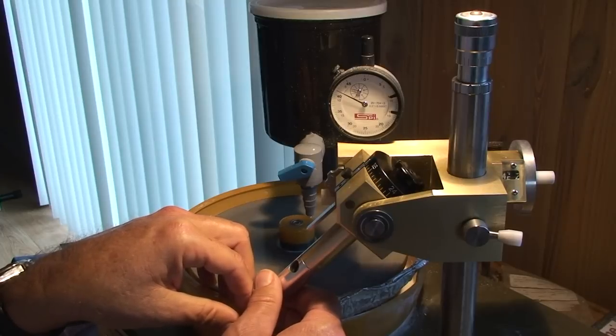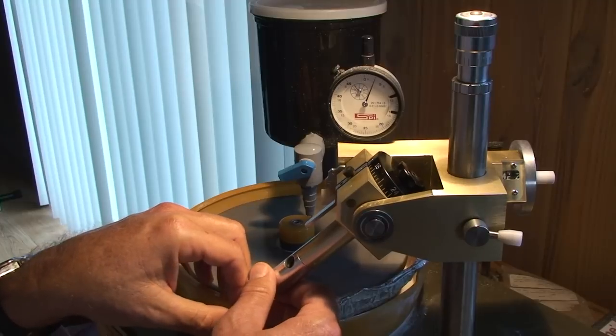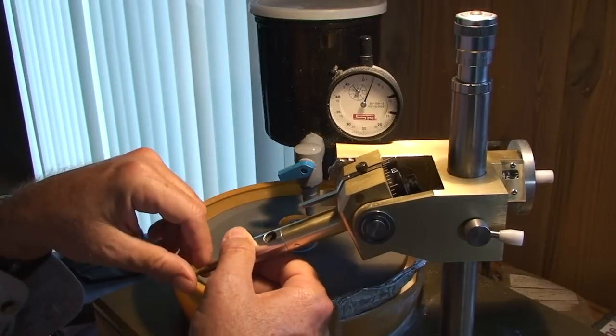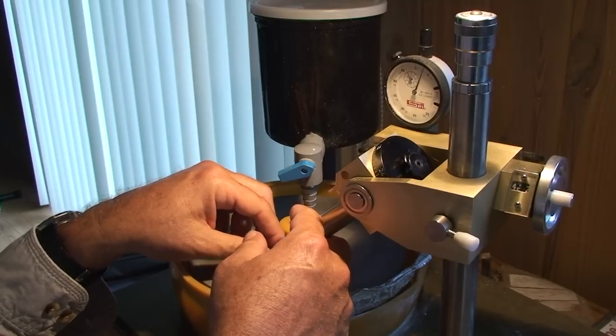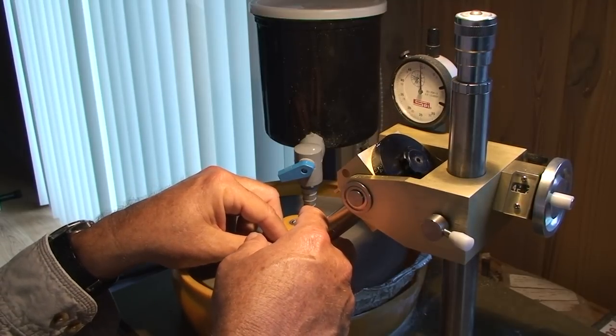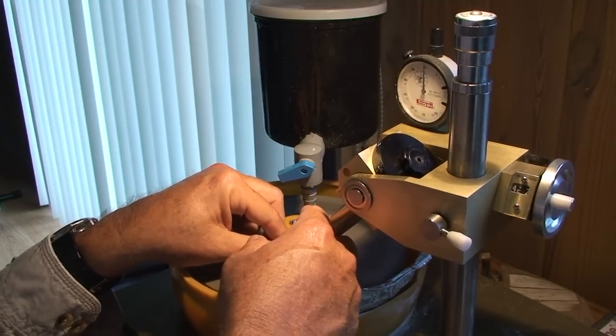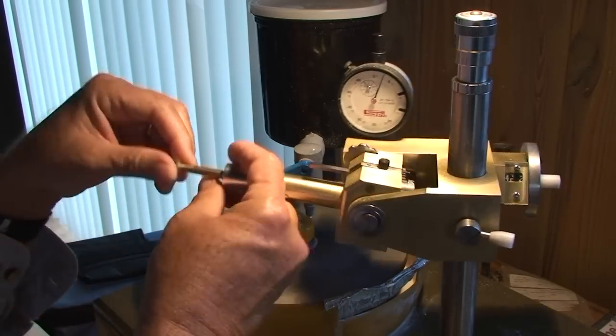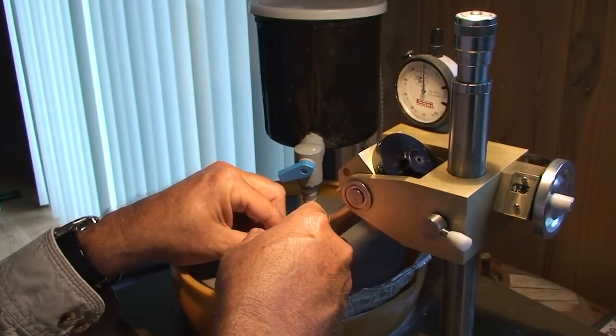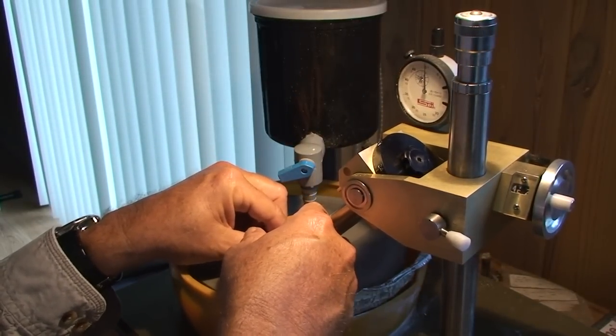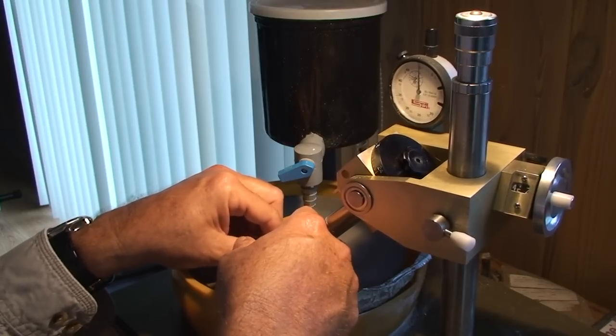Now you see this dial indicator. As I bring the stone down and get nearer and nearer the cut, it's going to come to zero. I'm simply using the dial indicator. I'm not using any kind of stop. Now the dial is simply a guide at this point. What I'm doing is cutting and looking. We are just about there. The only way to get a perfect gem is to eyeball it.